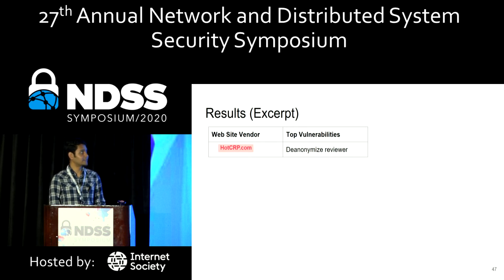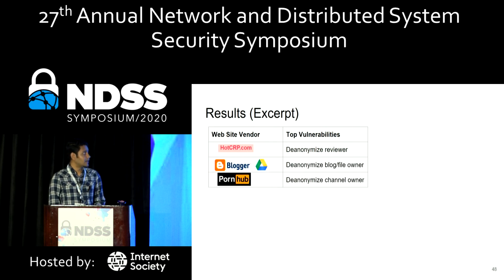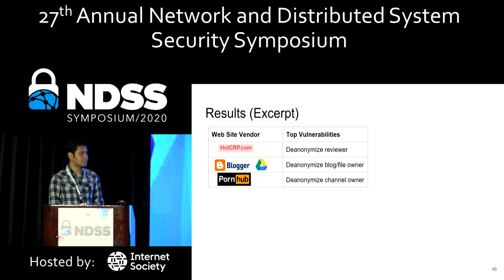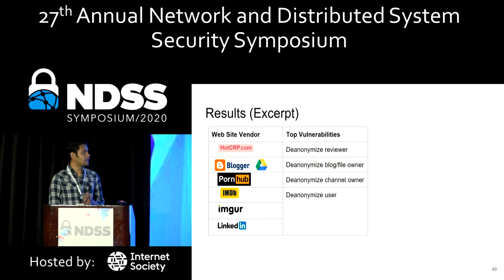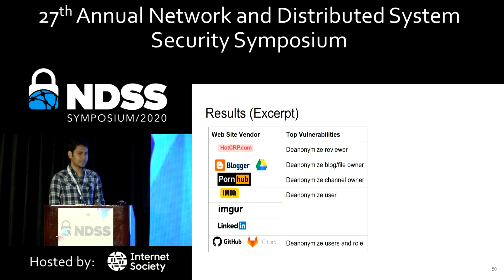In HotCRP, we identified that an attacker can de-anonymize the reviewer of a paper. In Blogger and Google Drive, an attacker can de-anonymize the author of a blog or the owner of a specific file. In Pornhub, the attacker can de-anonymize the owner of a specific channel. In IMDB, Imgur, and LinkedIn, the malicious site can de-anonymize the user. In GitHub and GitLab, the malicious site can de-anonymize users and identify their roles, such as maintainer, developer, or guest.